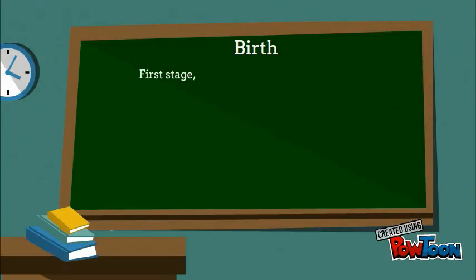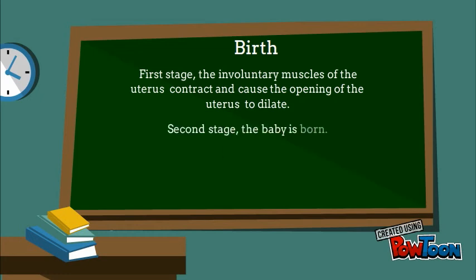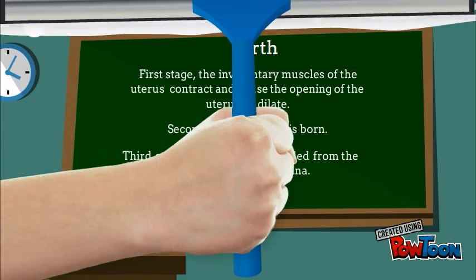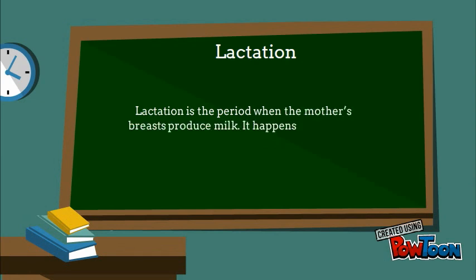There are three stages in birth. First stage: the involuntary muscles of the uterus contract and cause the opening of the uterus to dilate. Second stage: the baby is born. And third stage: the placenta is expelled from the uterus through the vagina. Finally, lactation is the period when the mother's breasts produce milk. It happens after giving birth.